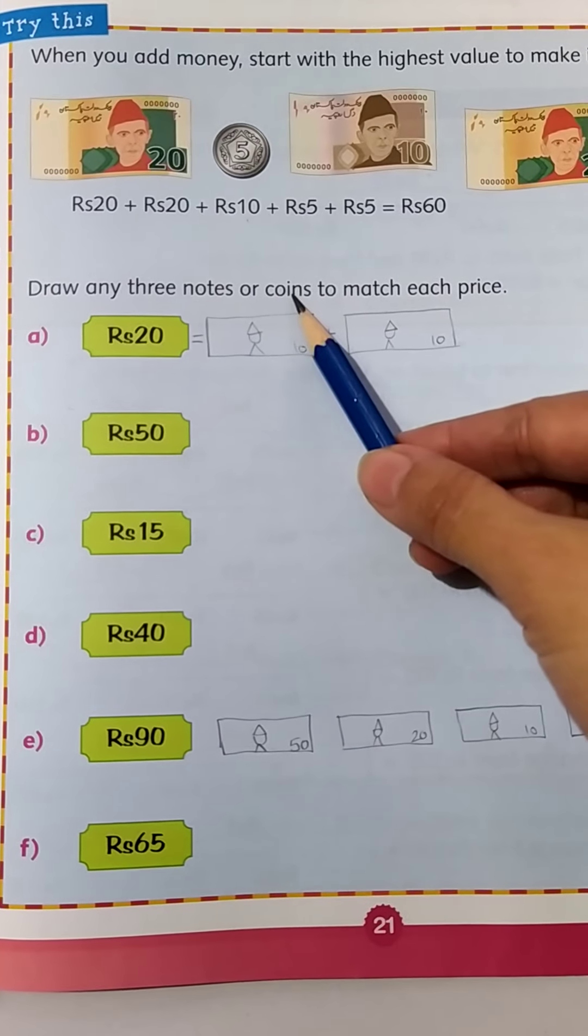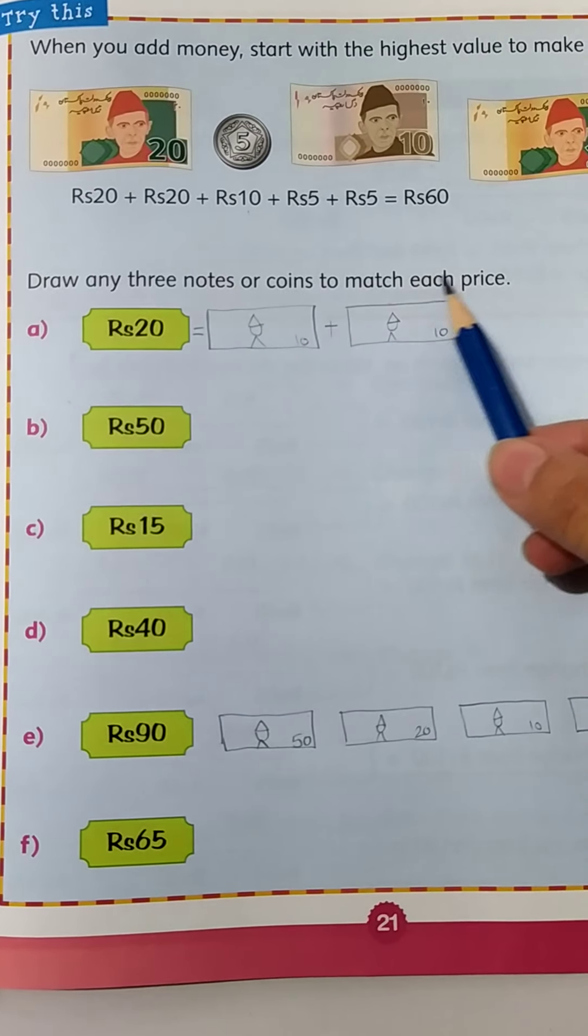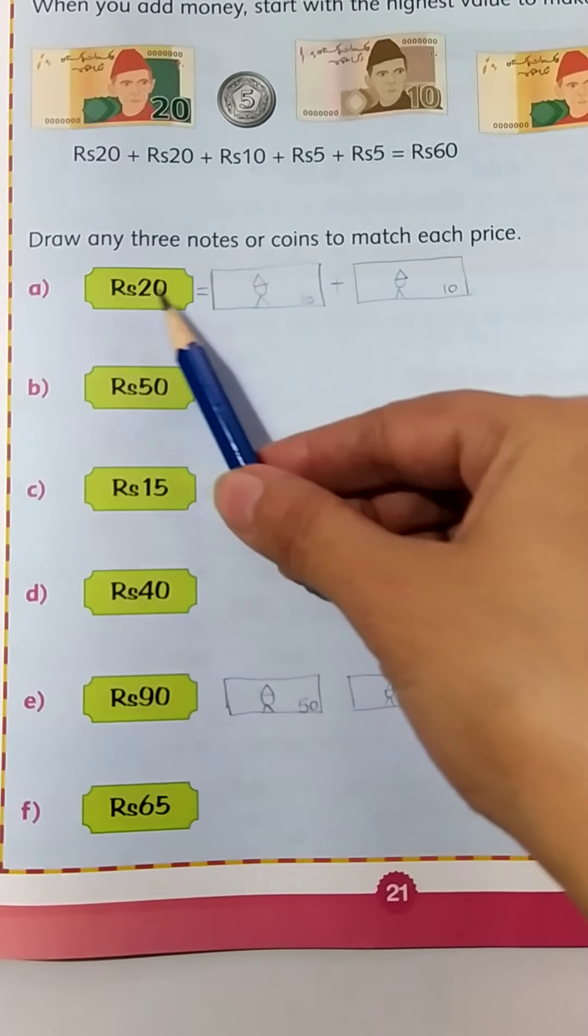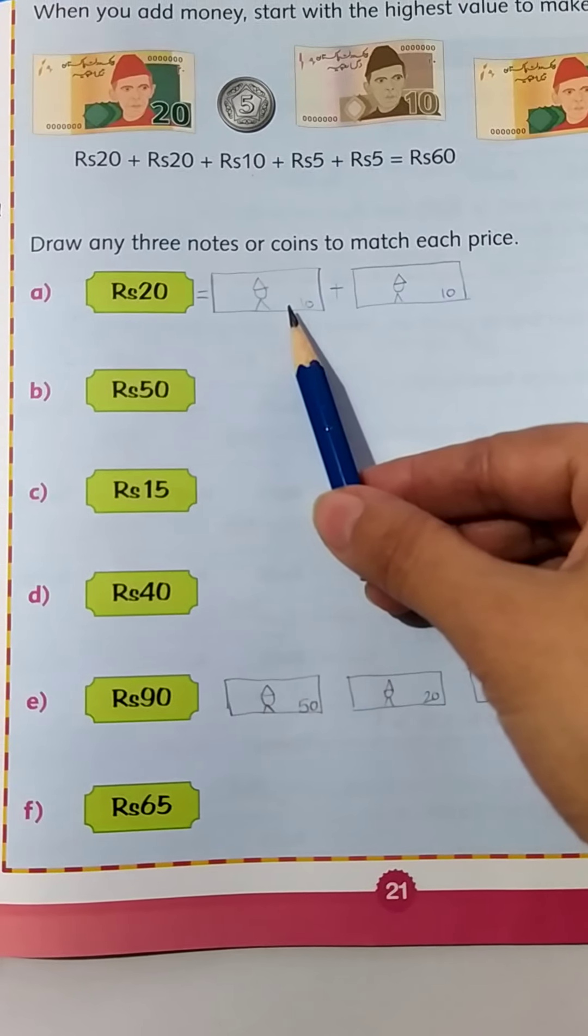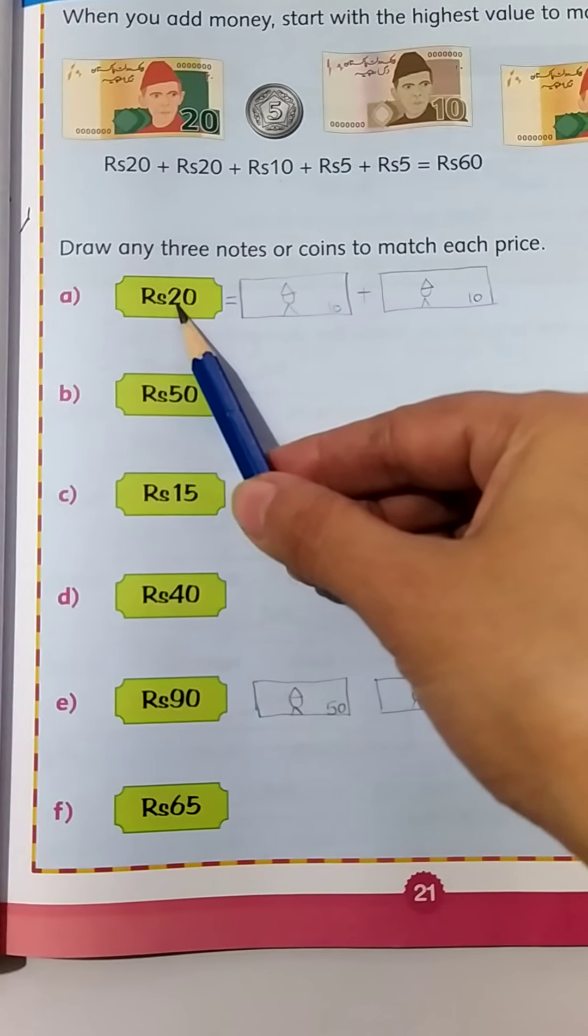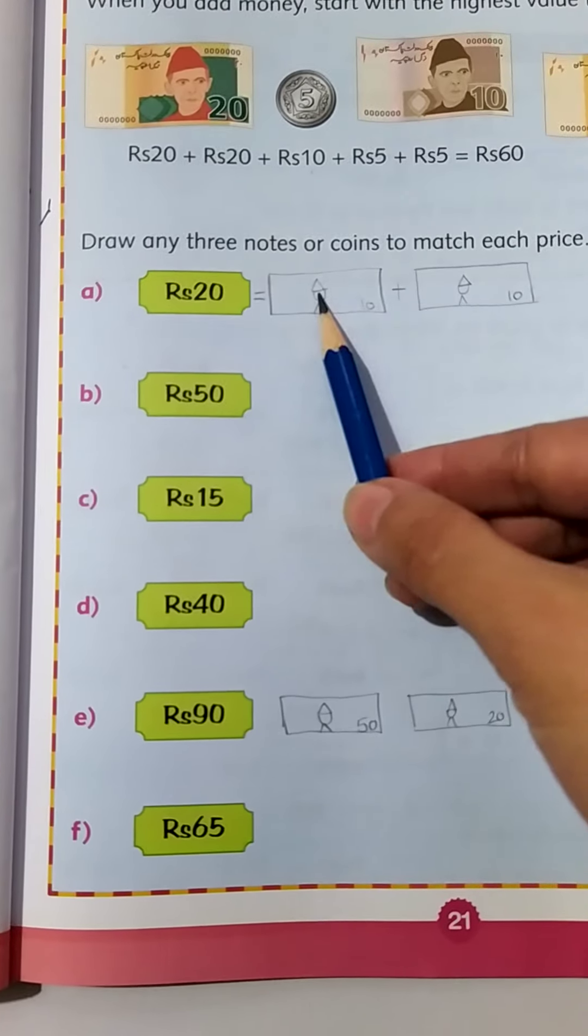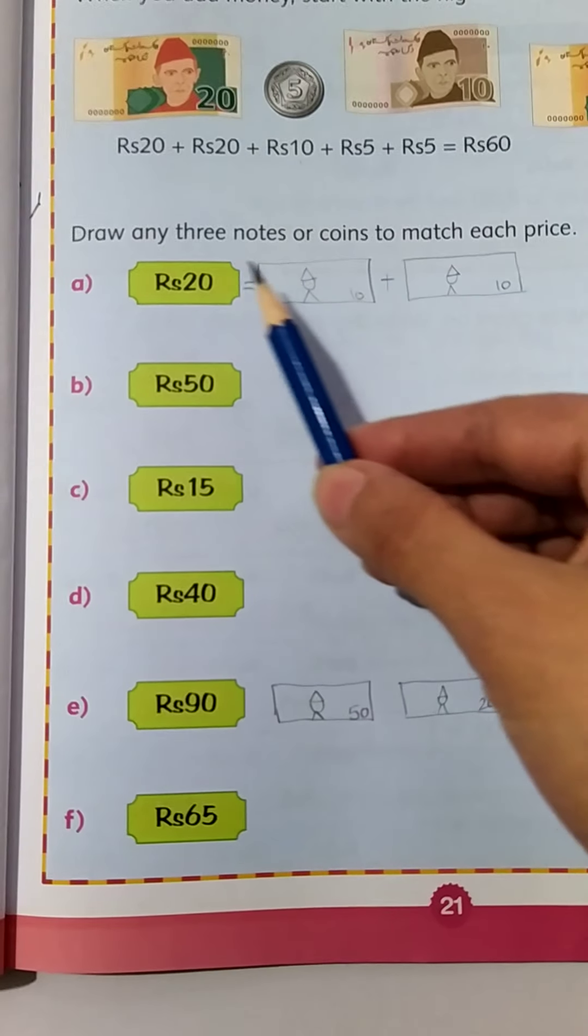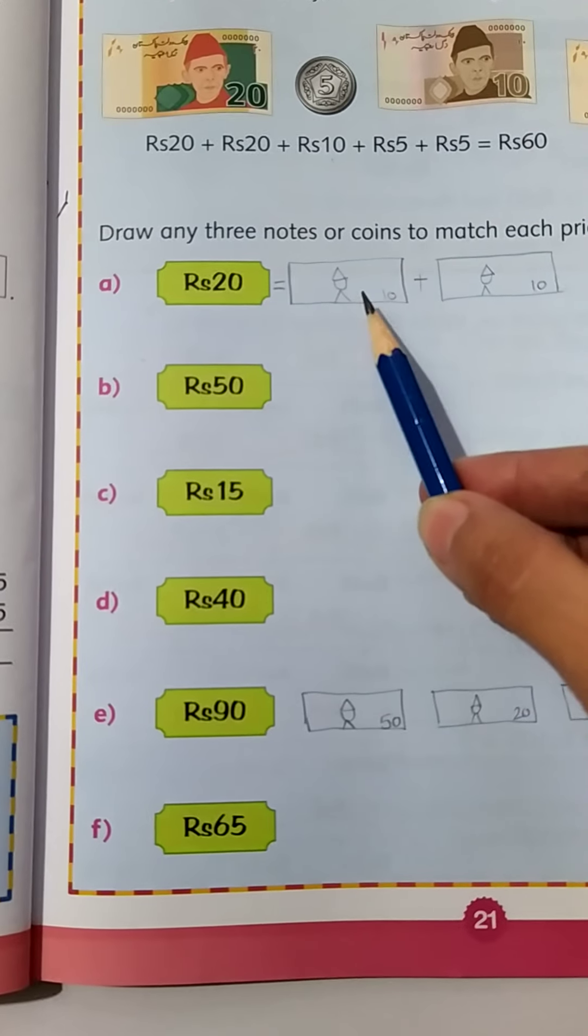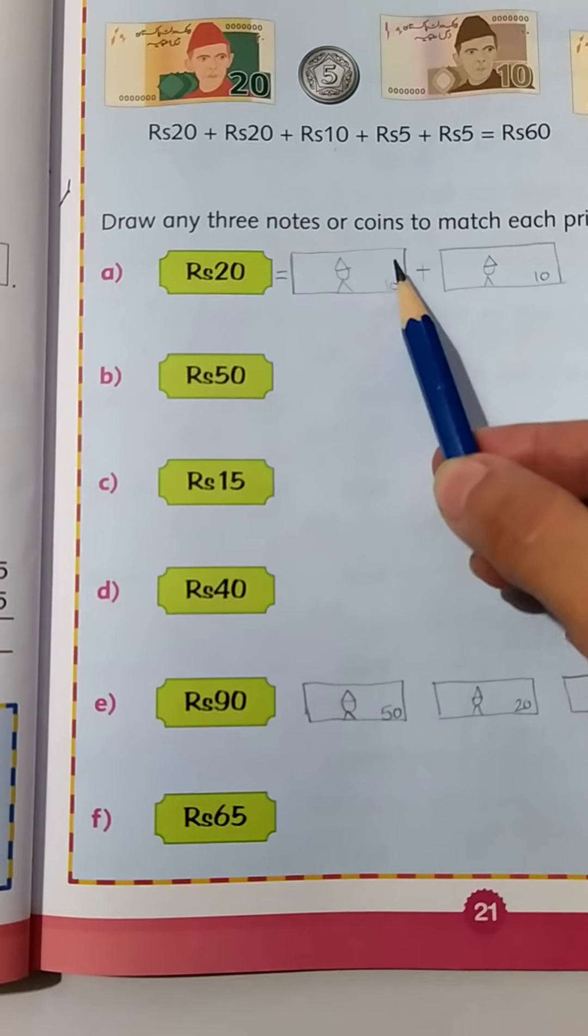Draw any three notes or coins to match each price. Okay, so this is a 20 rupees note. This is a 10 rupees note. I have drawn a 10 rupees note. I can divide this 20 rupee note into two tens. 10 plus 10 is 20. So I have made a 10 rupees note. You have to make the notes, just do not write only 10, you have to draw a note.